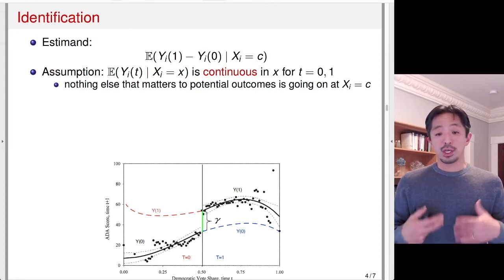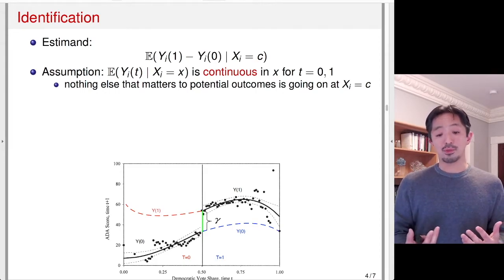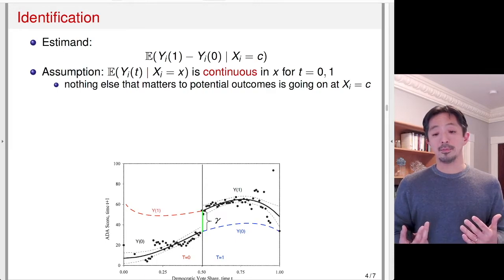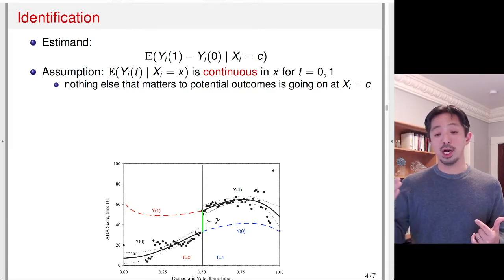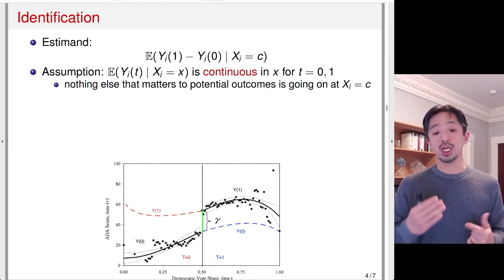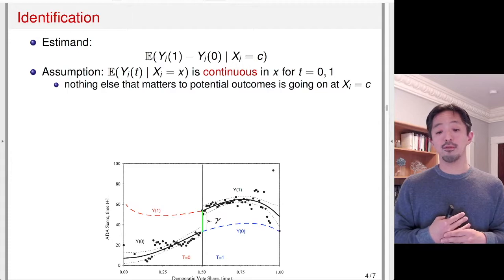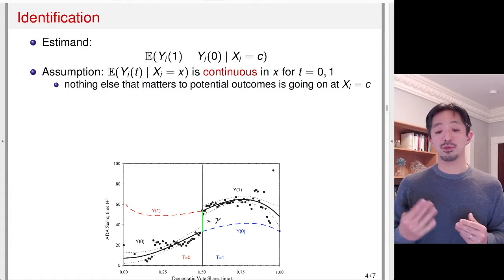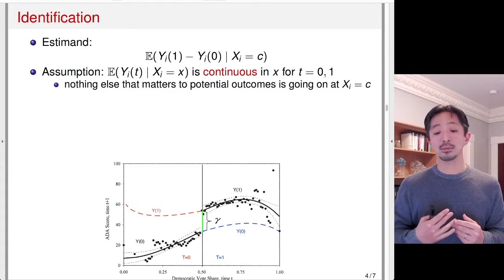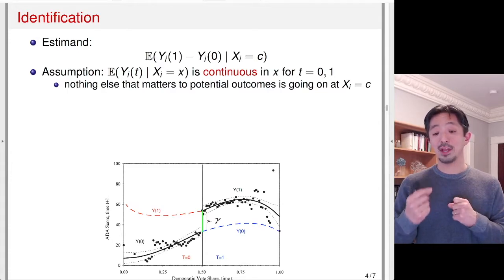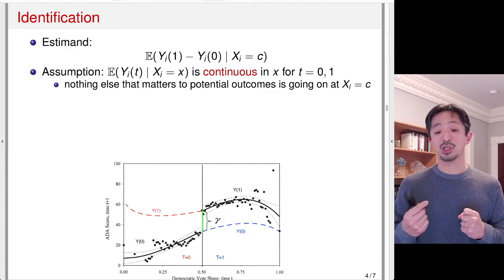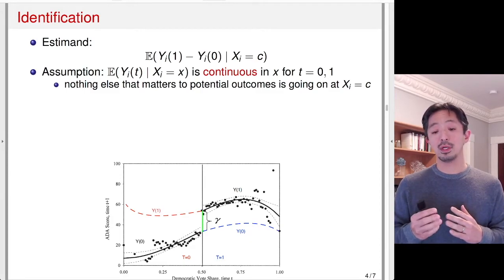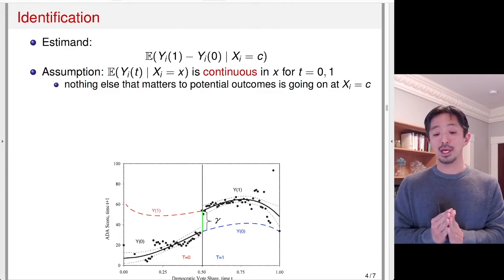So the continuity assumption says that the potential outcomes smoothly change from left to right, and no other factor that matters to the outcome happens at the threshold 0.5.